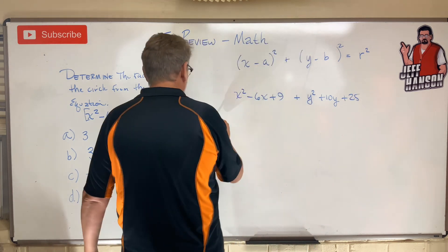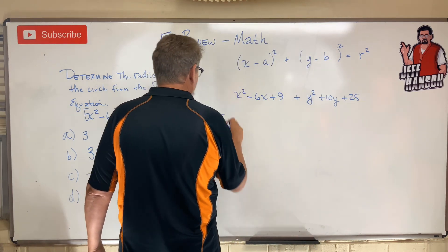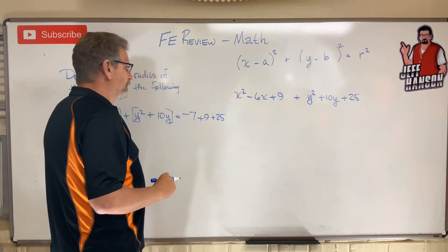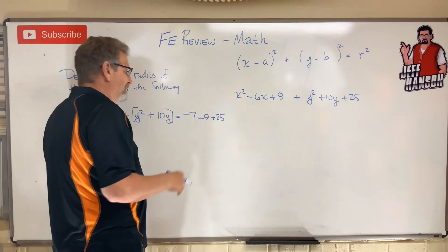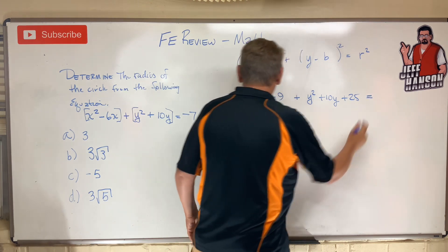If I got 25 on that side, I got to have 25 on that side, right? Whatever I do to this side, I got to do to that side. So that whole thing is going to be equal to— let's see, that's 2 and 25 is 27, right? Equals 27.